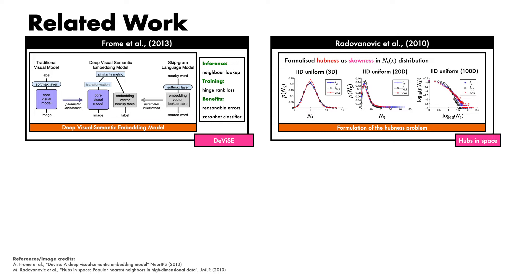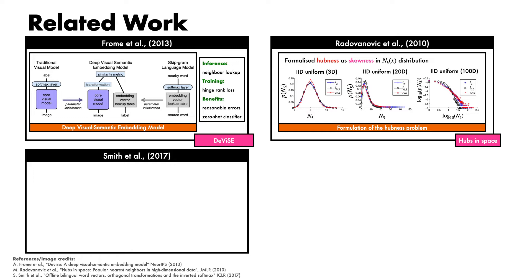This skewness corresponds to a small number of hubs that appear very frequently as nearest neighbours. Beyond synthetic data, this paper examines hubness from both a theoretical and empirical perspective. A third direction has explored techniques to mitigate hubness. An example is the work of Smith et al., which introduced the inverted softmax. This work focused on the problem of learning bilingual word vectors by first learning word vectors independently for two languages, and then learning a linear transformation to bring them into alignment. One observation made by the authors is that for such a linear transformation to be consistent, it must be orthogonal — meaning the mapping that transforms a given word in the source language to the target language should also be able to return it back to the original source word.